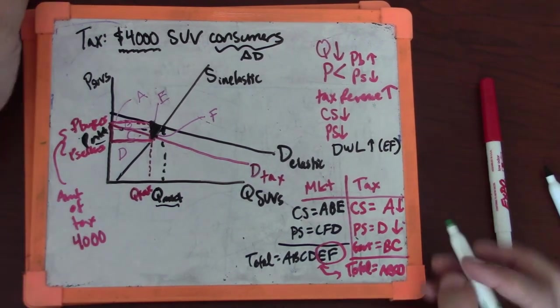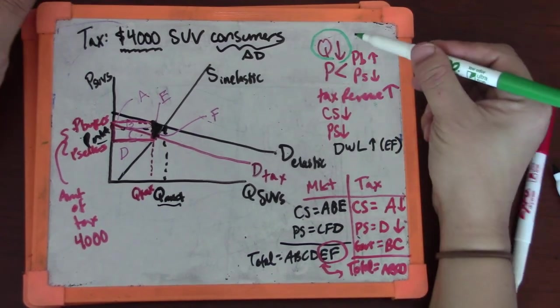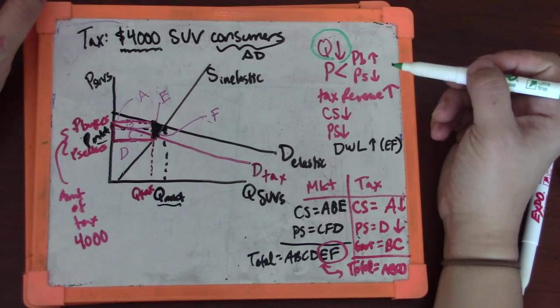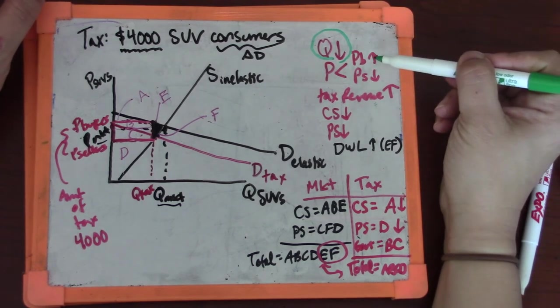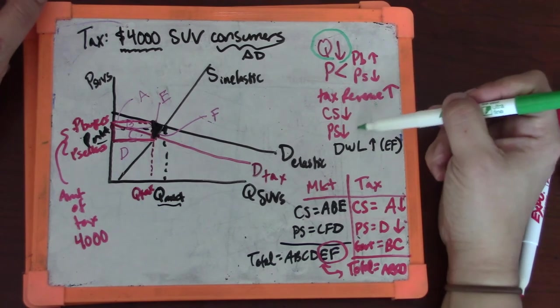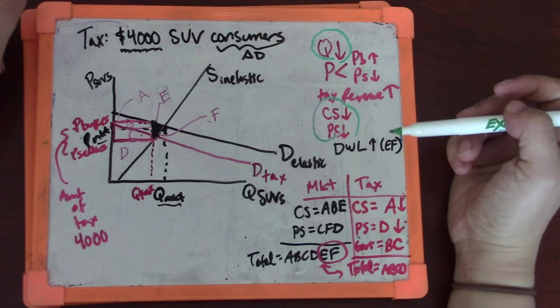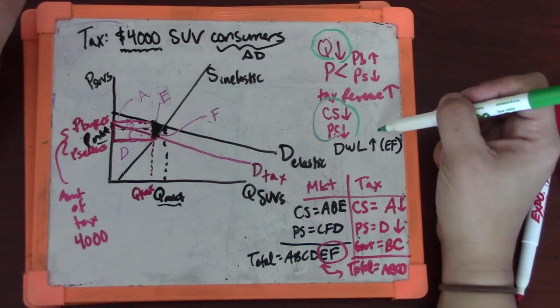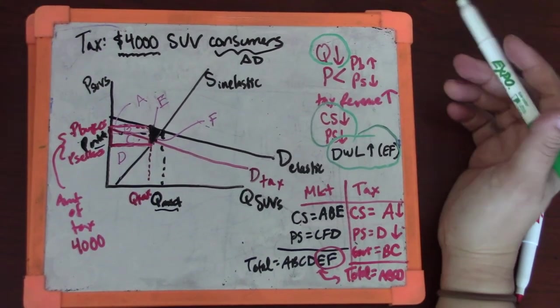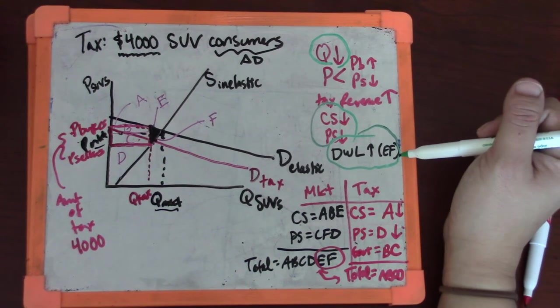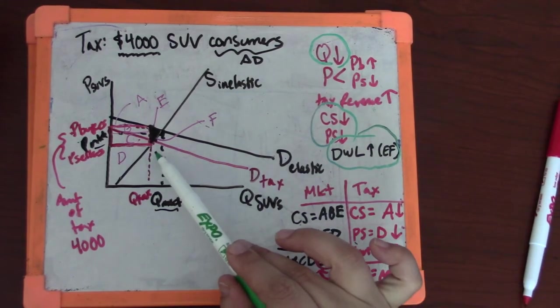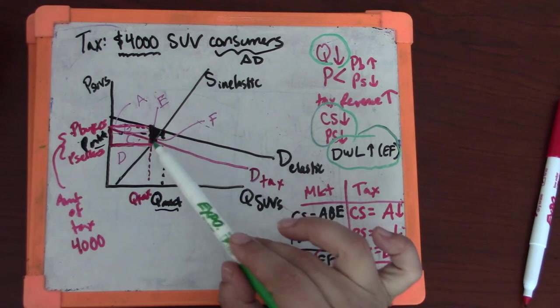In terms of pros and cons, things we like about this tax: if we believe there's a negative externality, it gets the job done and reduces the quantity of SUVs on the road. We don't really like the price effects because we think of buyers and sellers as actors whose well-being is important to us, and they're both worse off, so that's a con. This inefficiency is also a con - it destroys some mutually beneficial transactions.